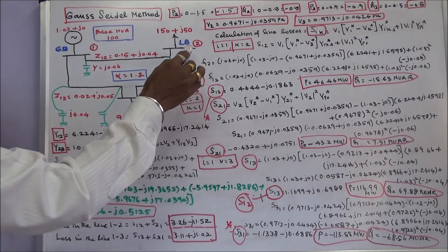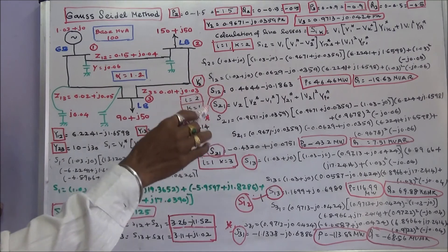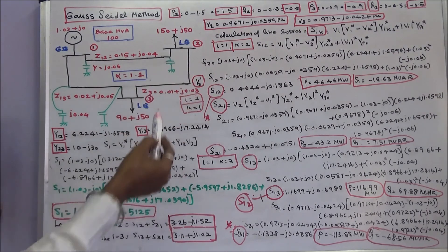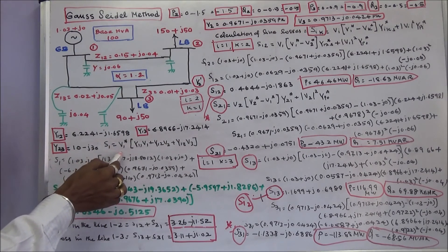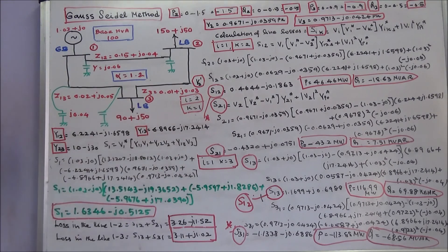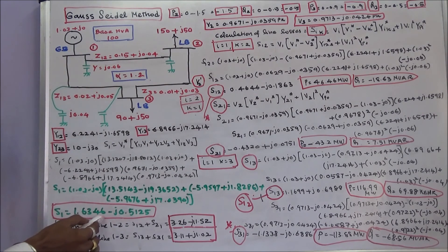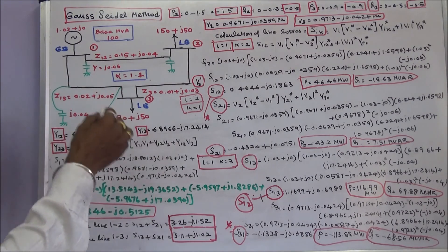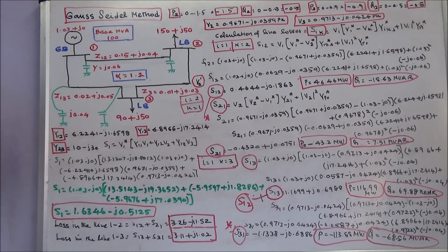Similarly we can calculate the line losses for lines 2-3 and 3-2 to get the total line loss in line 2-3. Next, the slack bus power S1 = V1* × (Y11×V1 + Y12×V2 + Y13×V3). Substituting all values, the slack bus power is 1.6346 minus j0.5125 per unit. We can verify this by adding S12 + S13 to get the same answer. This is how we calculate line losses and slack bus power.